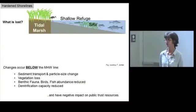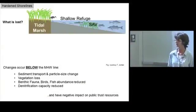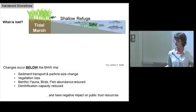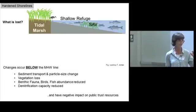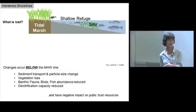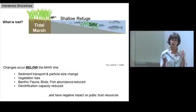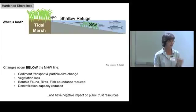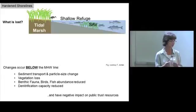When you harden a shoreline, you lose important connections. Natural systems include seagrass, tidal marsh, and shallow water — which is a refuge for small larval and juvenile fish to escape large predators. About 90% of commercial fisheries in North Carolina are estuary-dependent. They spawn offshore, come in as larval fish, and need shallow water habitat to transition from larvae to juveniles to adults.